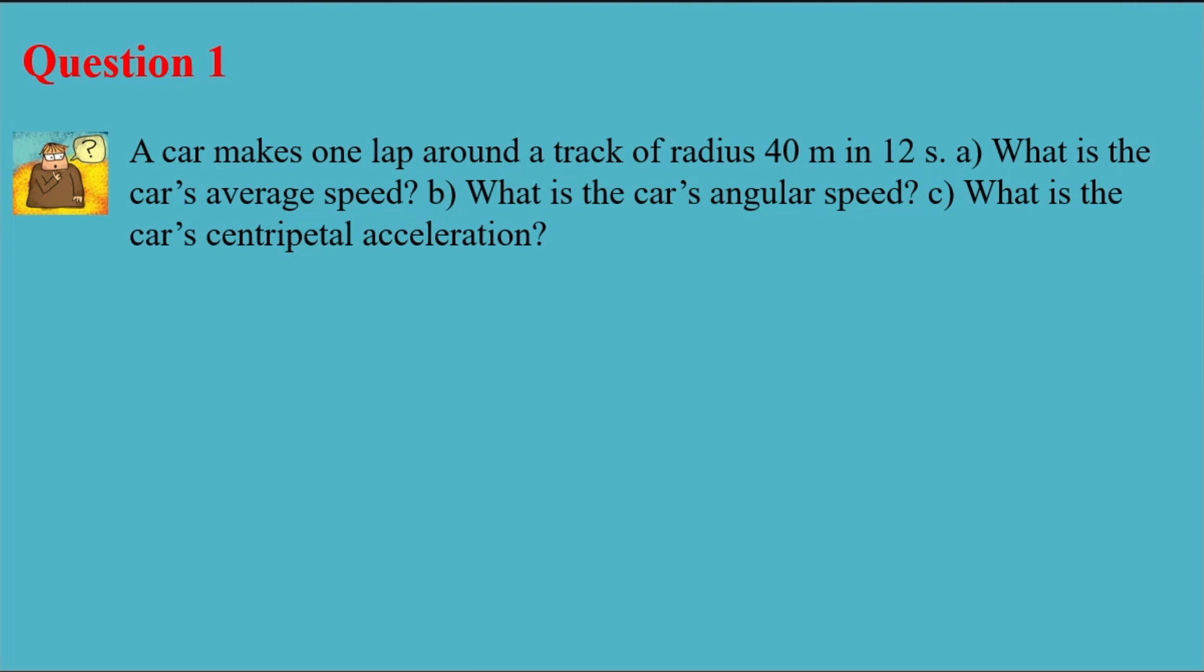A car makes one lap around a track of radius 40 meters in 12 seconds. So I have R as 40 meters and T is 12 seconds.